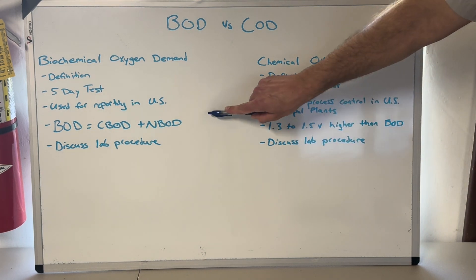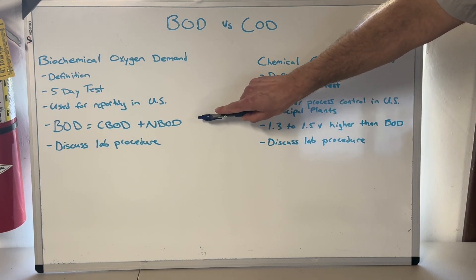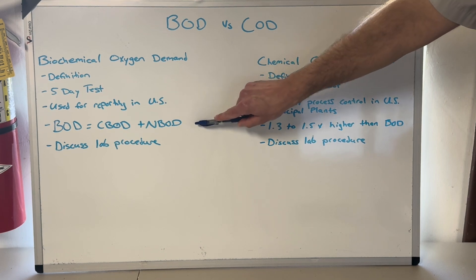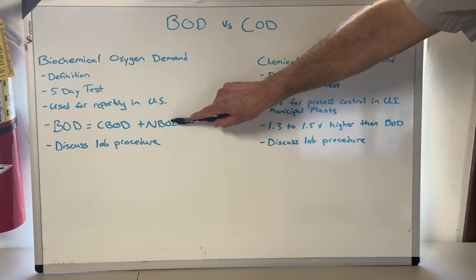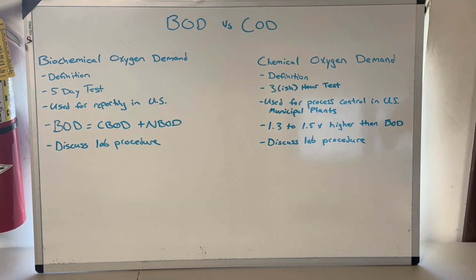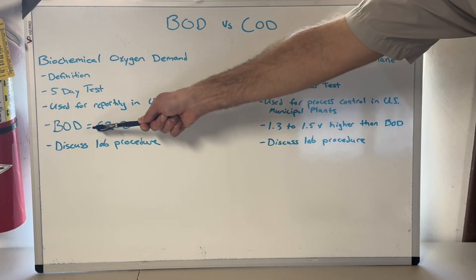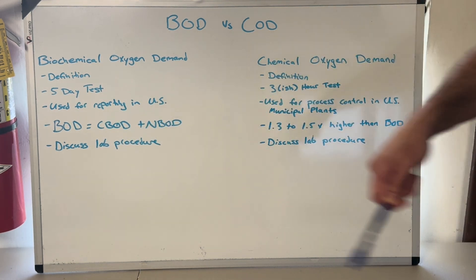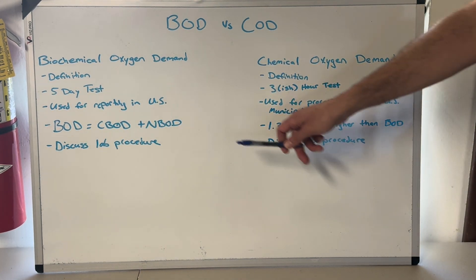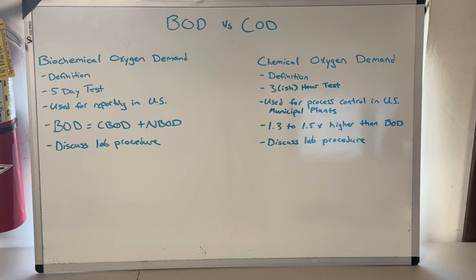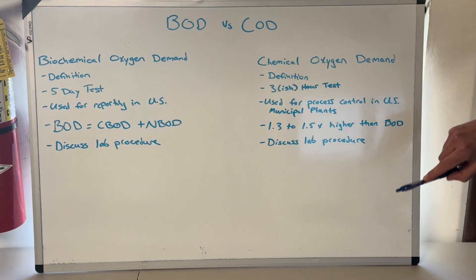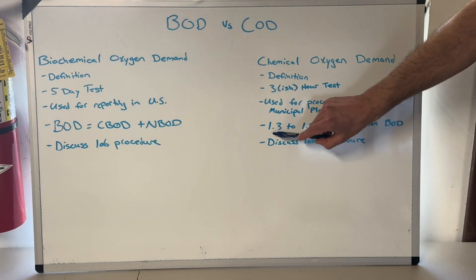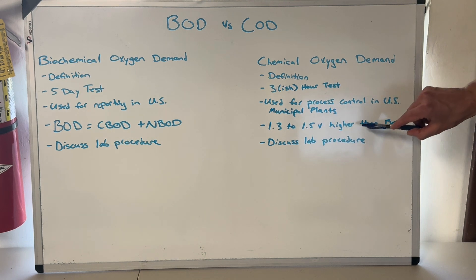BOD consists of carbonaceous BOD (CBOD) and nitrogenous BOD (NBOD). This may be written as BOD5, since it's a five-day test. We'll get into how you measure those in an advanced math lesson later on the channel. The chemical oxygen demand is typically 1.3 to 1.5 times higher than BOD — so just know that the COD result is typically higher and it's done in just a few hours.